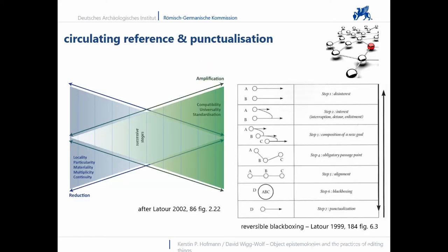Every stage that produces knowledge is based on a reduction of locality, particularity, materiality, variety and continuity, as well as an amplification of compatibility, universality and standardization. Within the framework of network theory, the resulting transformation of the world into apparently isolated objects by means of repeatedly performed entanglements is known as punctualization. This is not just a research practice, but also black-boxing that takes place in everyday life. Punctualizations are often the starting points for further action and research. In the digital age, they are a precondition for networking data. They are in principle reversible — known then as depunctualization — but as part of essentialization, they are often difficult to undo.